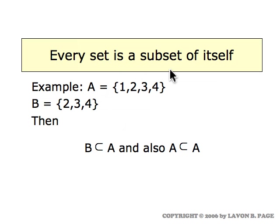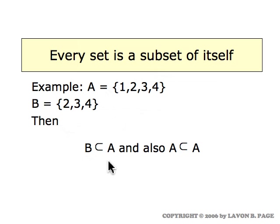Every set is a subset of itself. For example, suppose capital A is the set consisting of the four numbers one, two, three, and four, and suppose B is the set including the numbers two, three, and four. Then B is a subset of A because every element of B is included in the elements of A. But A is also a subset of A, because every element of A is included among the elements of A.